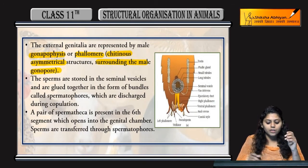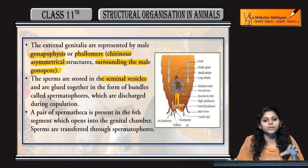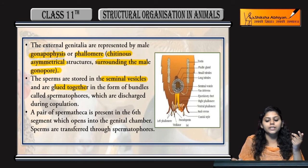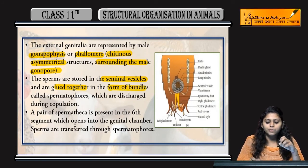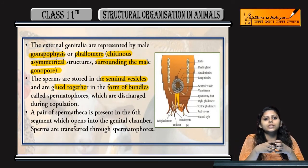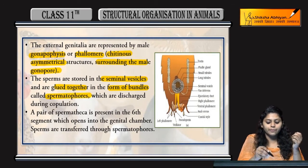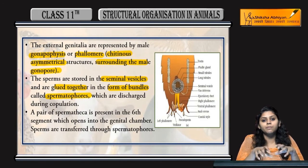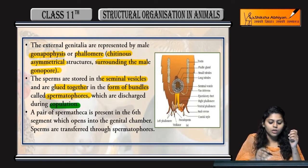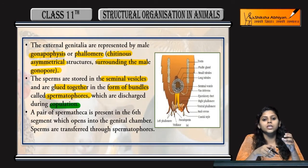Sperms are stored in the seminal vesicle. They are glued together in the form of bundles. These are stored as spermatophores and are discharged during copulation.